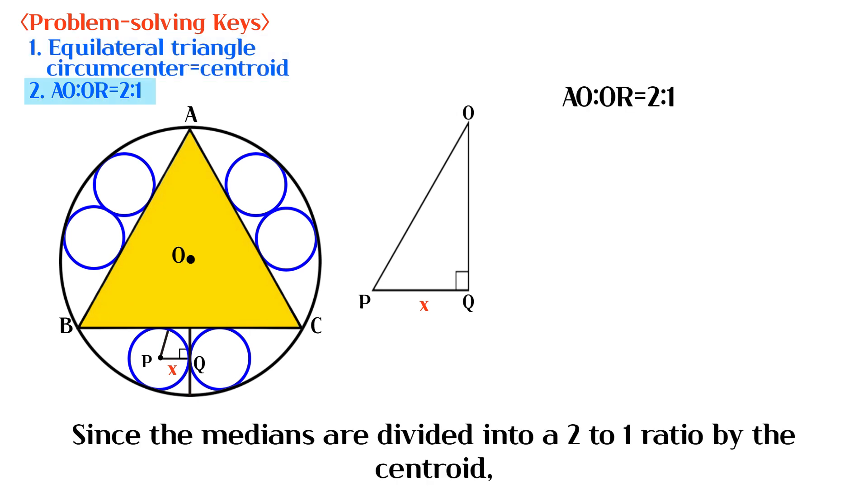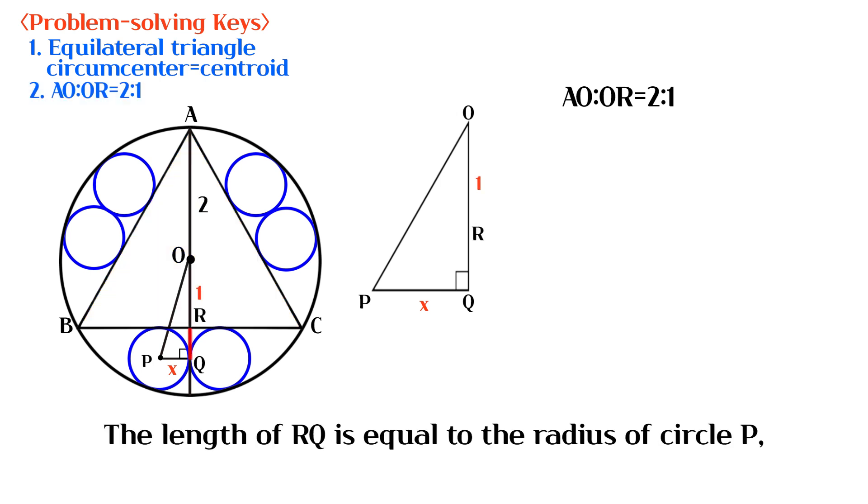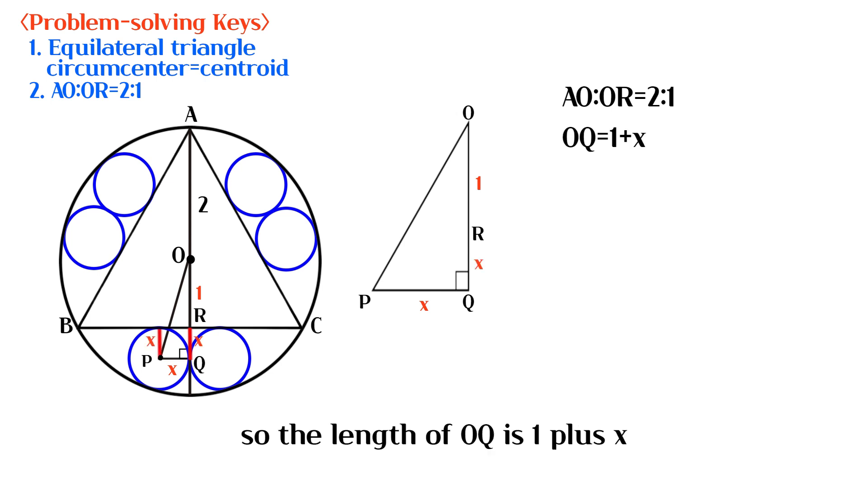Since the medians are divided into a 2 to 1 ratio by the centroid, the length of OR is going to be 1. The length of RQ is equal to the radius of circle P. So the length of OQ is 1 plus X.